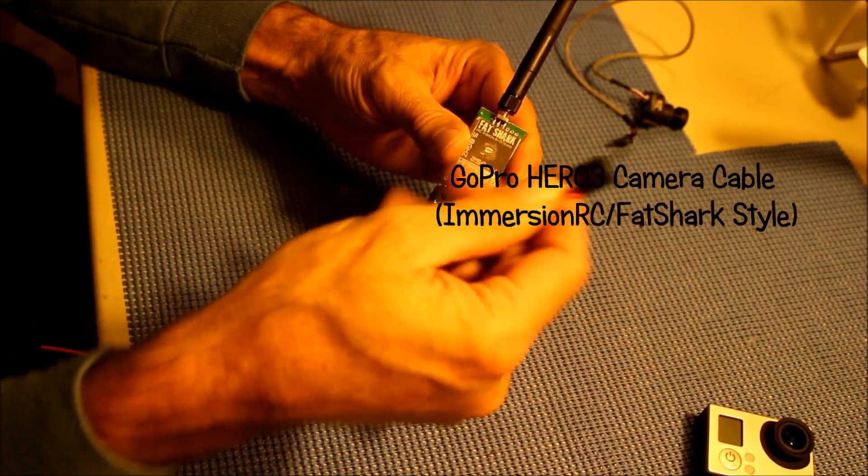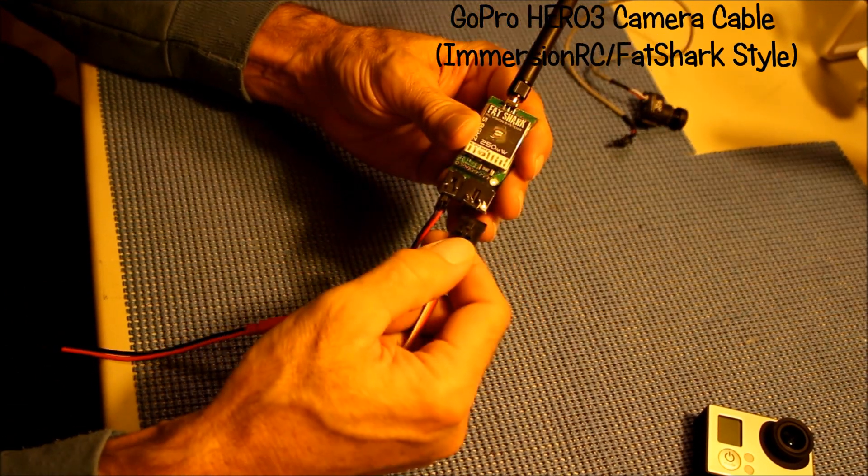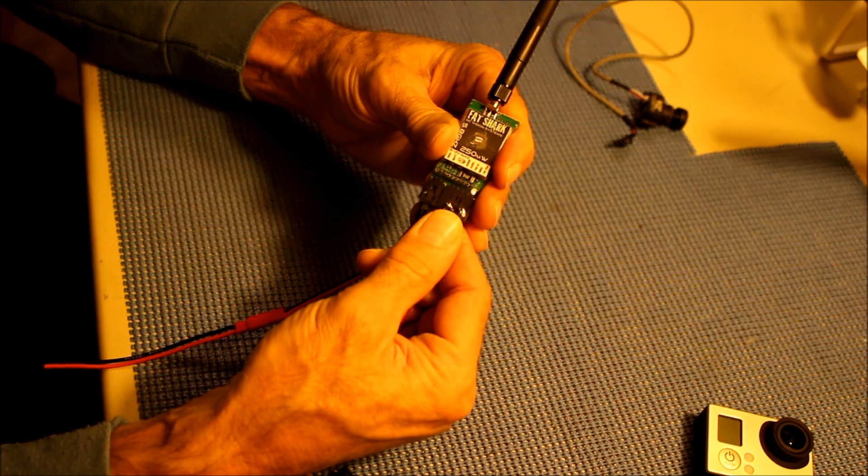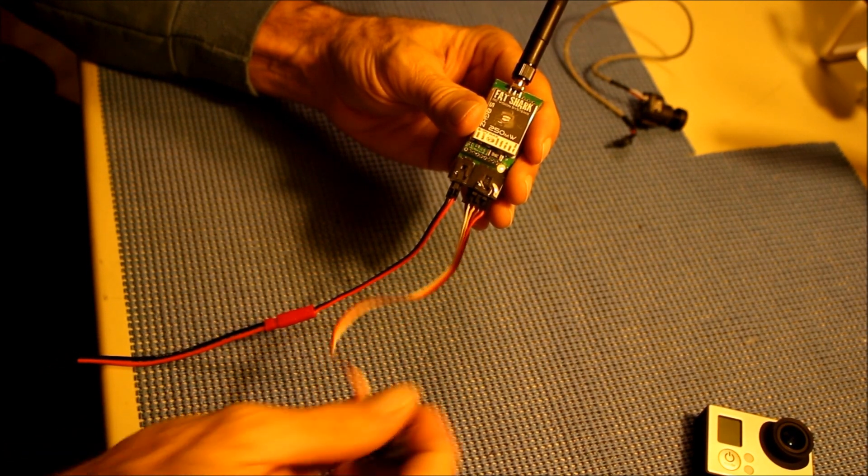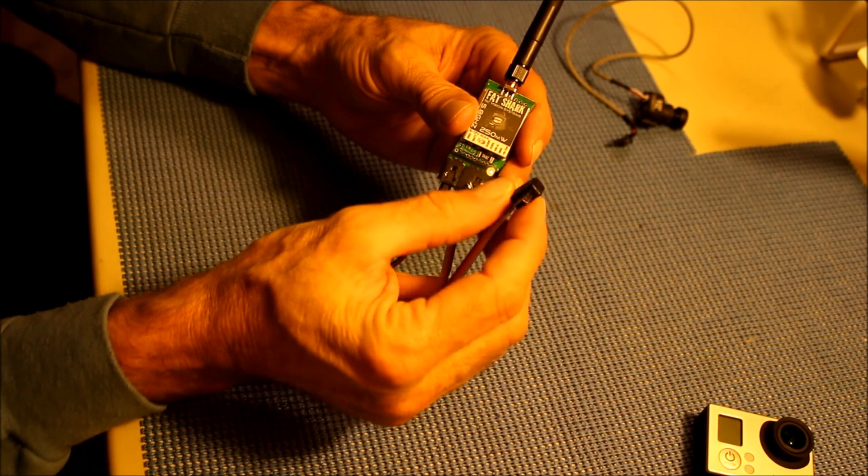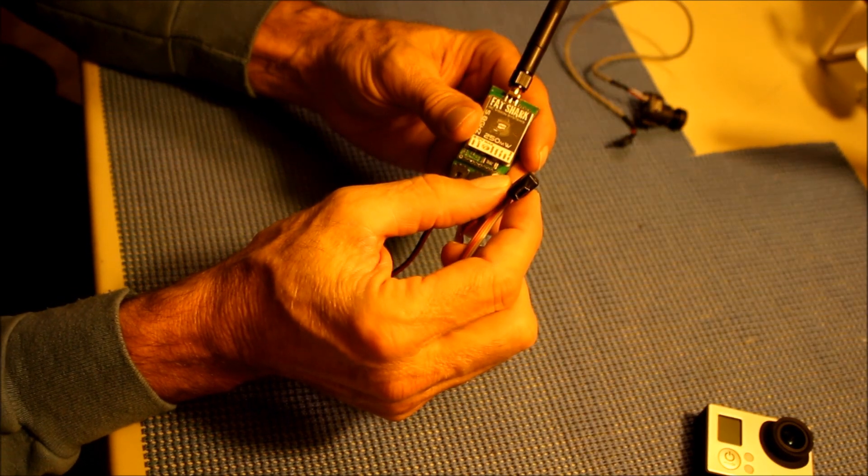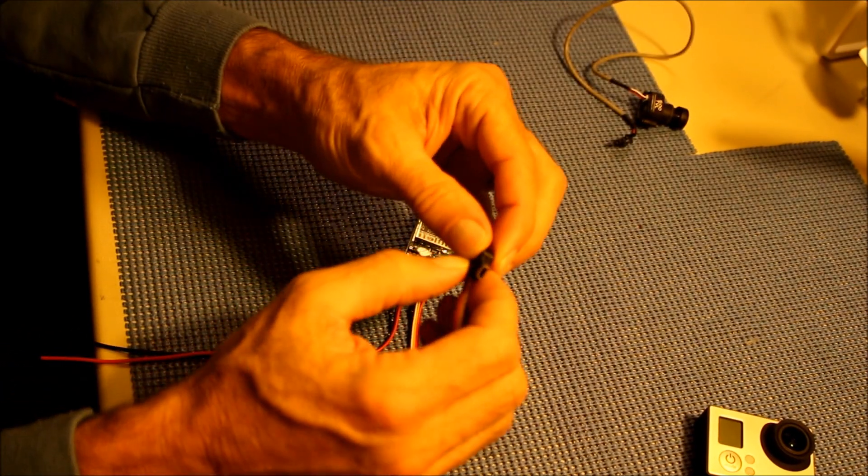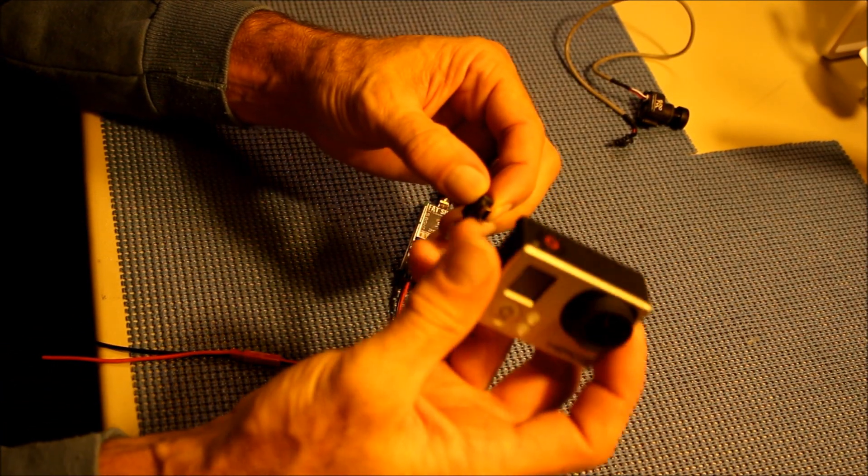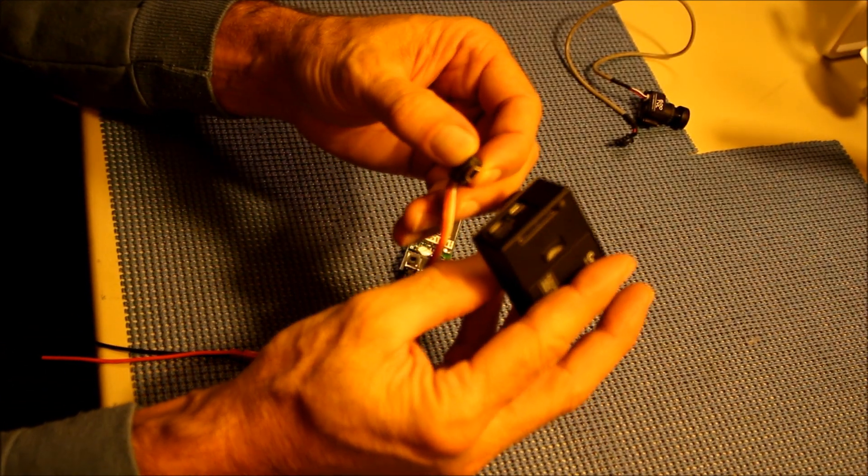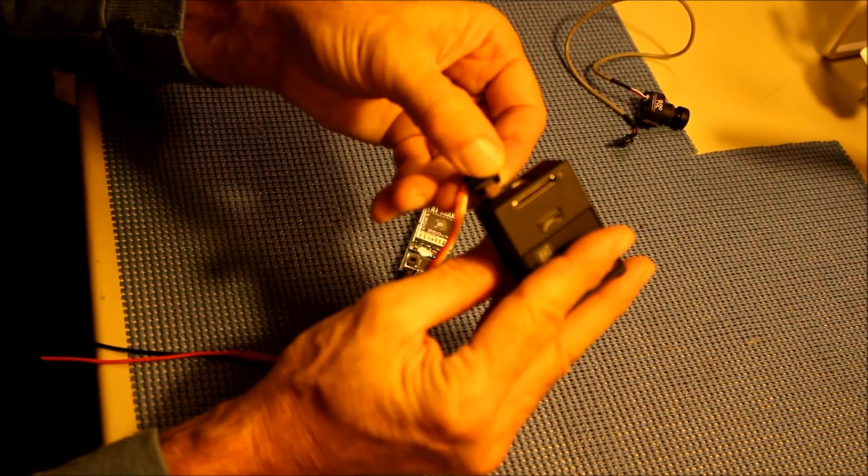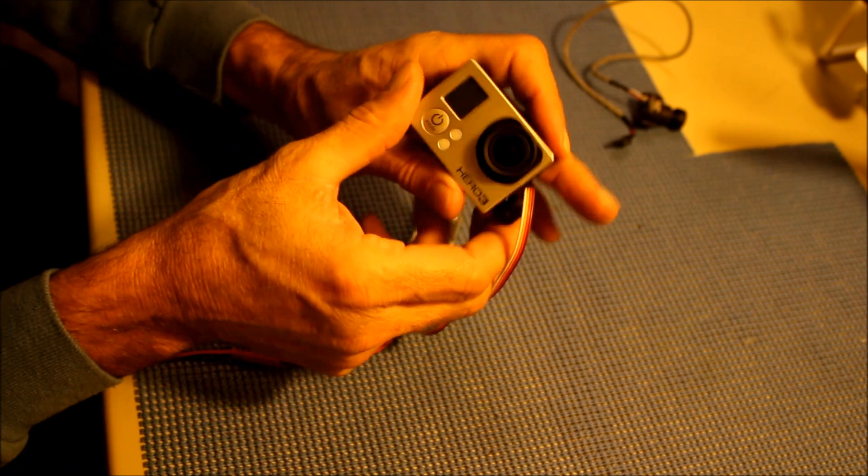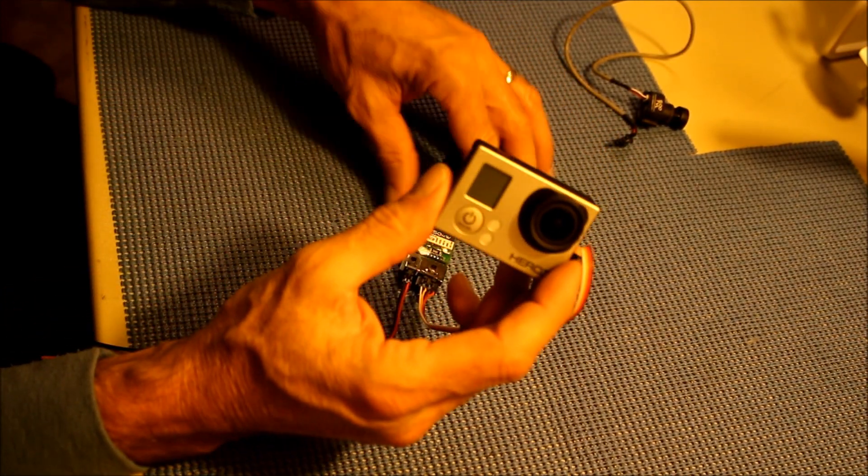On one side it has a black connector that plugs into the Fatshark transmitter like the original cable did and on the opposite end is a mini USB connector that we can use to connect our Hero 3 camera. Here's the Hero 3 camera and we can make the connection like so and now our Hero 3 camera is connected to the transmitter.